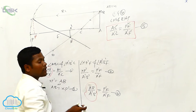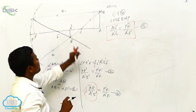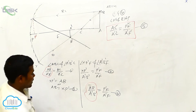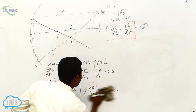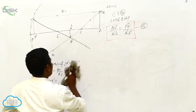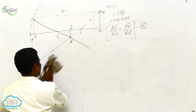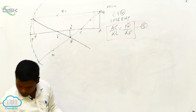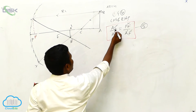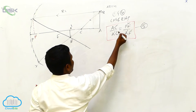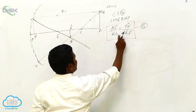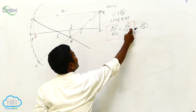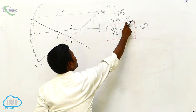So these values I am going to get from the diagram. I want: first AC, next A dash C, next P dash F, and next A dash F. These values.